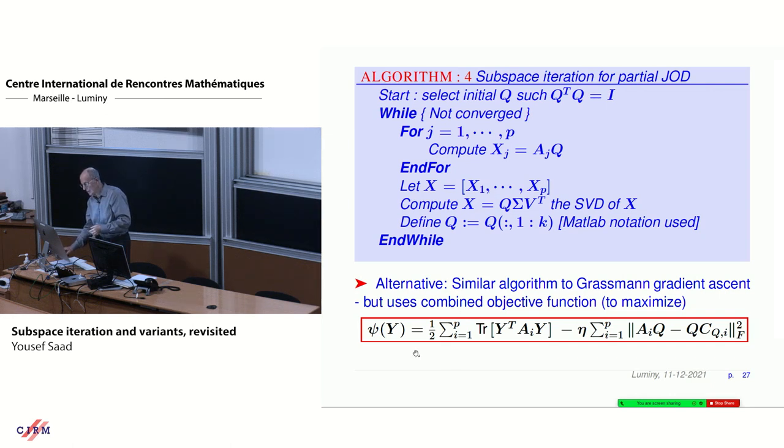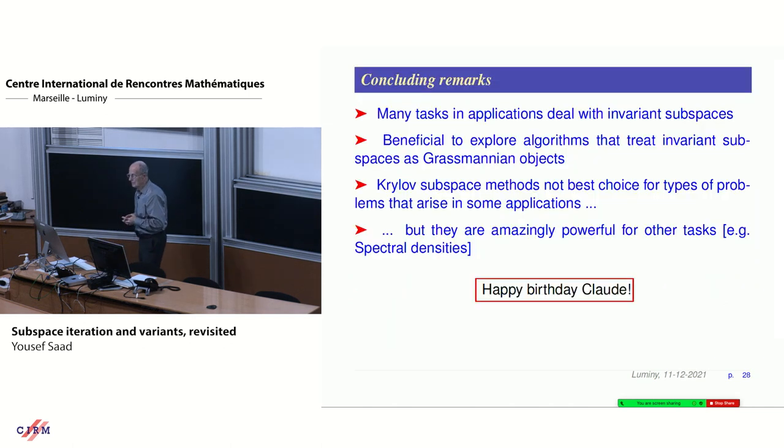You can use subspace iteration for each of the subspaces. Then you gather all these XIs that you do in SVD, you get the subspace that's common, et cetera. Now what you're trying to do is use this approach I talked about with using the gradient and conjugate gradient. We're trying to combine that with this approach. Concluding remarks. There's a lot of tasks that deal with invariant subspaces. It's beneficial to look at these from the angle of subspaces as opposed to eigenvalue problems. Krylov methods are not very good for these types of problems, but they're amazing and powerful for other techniques. I will end by saying happy birthday Claude.